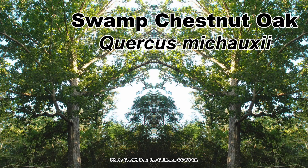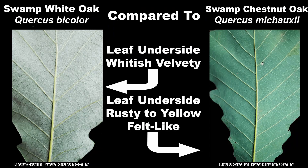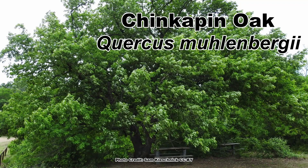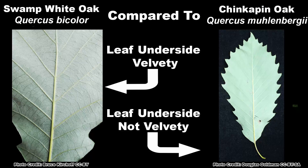The swamp chestnut oak, Quercus michauxii, has similarly shaped leaves, but the underside is rusty to yellowish with a felt-like texture. And the chinkapin oak, Quercus muehlenbergii, which sometimes has leaves with a whitish underside but has fine non-velvety hairs.